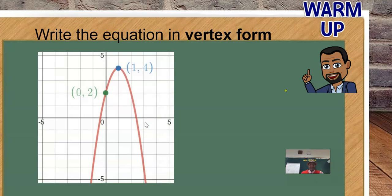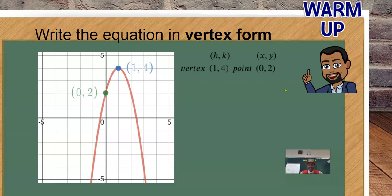If you write this equation in vertex form, you should be able to identify two points. You can identify the vertex — you can't write it in vertex form if you don't know what the vertex is. The point (0, 2) is fairly obvious as well. So the vertex is the point (1, 4), which we denote with h and k: h is 1 and k is 4. The point (0, 2) is any x and y on the curve we can identify.